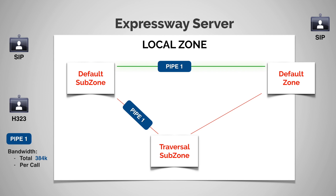Say an H.323 endpoint trying to call another SIP endpoint in the default zone as well. Because this is a traversal call, it's going to take a completely different path — from the default subzone to the traversal zone, then to the default zone. We might be tempted to think the call will go through because it's taking a completely different path. But since pipe1 has been applied to the link between the default subzone and the traversal subzone, the call is going to get rejected because the bandwidth allocated for that pipe is already being used up in the initial SIP-to-SIP call.